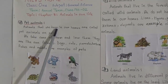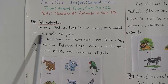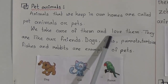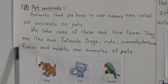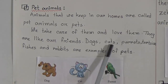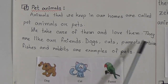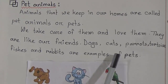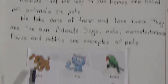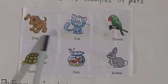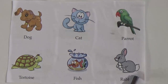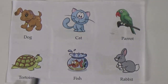The first topic is pet animals. Animals that we keep in our homes are called pet animals, or pets. We take care of them and love them. They are like our friends. Dogs, cats, parrots, tortoise, fish, and rabbits are examples of pets. Here is a picture of our pets — dogs, cats, parrots, tortoise, fish, and rabbit — all are pet animals.